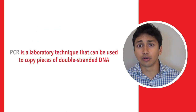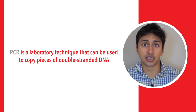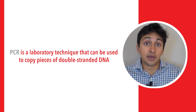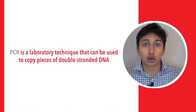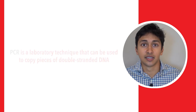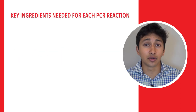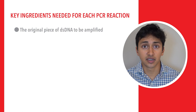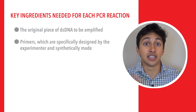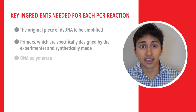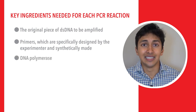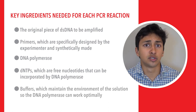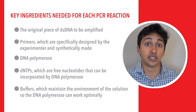To summarize, PCR is a laboratory technique that can be used to copy pieces of double-stranded DNA. It can be extremely useful in amplifying DNA — taking a really small amount of DNA that might be hard to detect and making a large number of copies that would make it much easier to detect. For PCR on the MCAT, you need to know: the original piece of double-stranded DNA to be amplified; primers, which are specifically designed and synthetically made; DNA or Taq polymerase; dNTPs, which are free nucleotides that can be incorporated by DNA polymerase; and buffers, which maintain the solution environment so that DNA polymerase can work optimally.